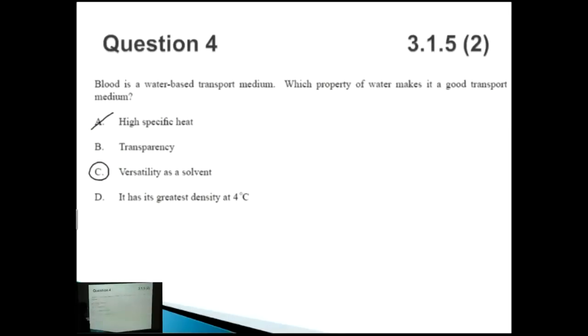How about transparency? Transparency - no, while it still is a property of water, transparency is more to do with the fact that sunlight can go through water, so if it can go through water then plants which live underneath it can also photosynthesize as well. How about D, it has its greatest density at four degrees Celsius? This has got nothing to do with it being a transport medium, but more about the thermal property similar to point A again. So in this case the answer is C.